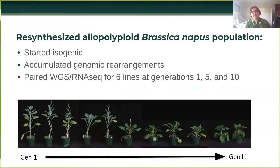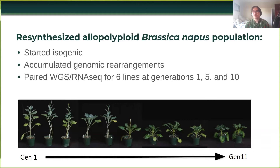To investigate allopolyploidy, I used a unique population of resynthesized allopolyploid Brassica napus. We know the parents of Brassica napus: it's Brassica rapa, which you may know as turnip, and Brassica oleracea, which is broccoli, cauliflower, kale, kohlrabi. Taking two lines that are doubled haploid and crossing them produced isogenic, independently crossed allopolyploid lines. These lines accumulated interesting things like genomic rearrangements and aneuploidy.